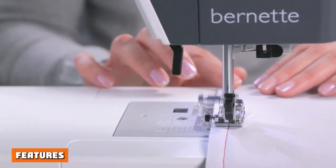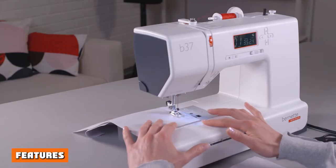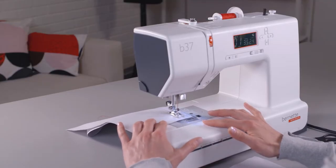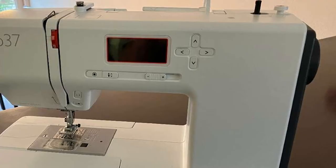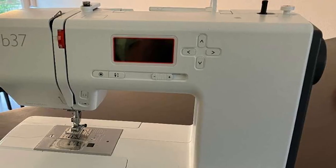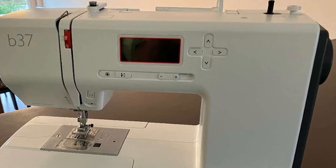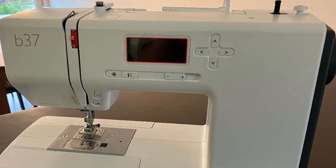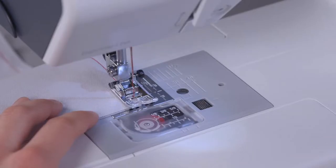The Bernett B37 sewing machine comes with 50 different stitches in total. These include 17 utility and stretch stitches, 2 darning stitches, 19 decorative stitches, 5 buttonholes, and 7 quilting stitches. Since they are built directly into the machine, you can begin a range of projects right away.